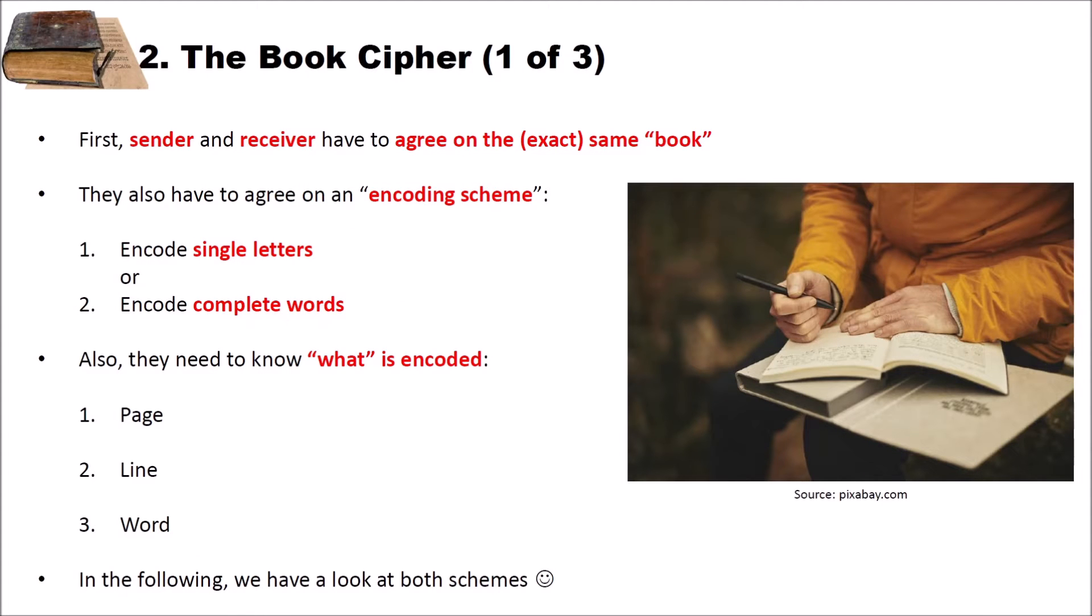Now let's have a look how book ciphers actually work. First sender and receiver have to agree on the exact same book or text document. Otherwise the encryption works but the decryption won't. Then they also have to agree on an encoding scheme. We have two different encoding schemes: The first one is to encode only single letters, or the second one is to encode complete words. And also they need to know what is encoded. For instance you could encode the page, the line, but you can also skip these and only encode the word. But the word is the thing that we always have to encode. In the following we have a look at both of these schemes, the single letters and the complete words scheme.